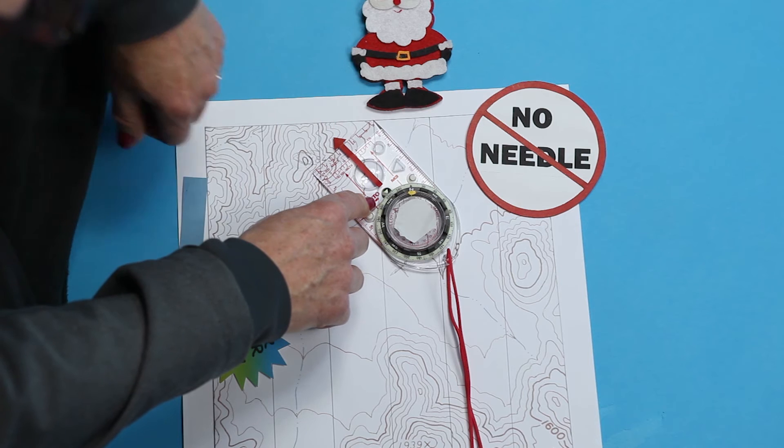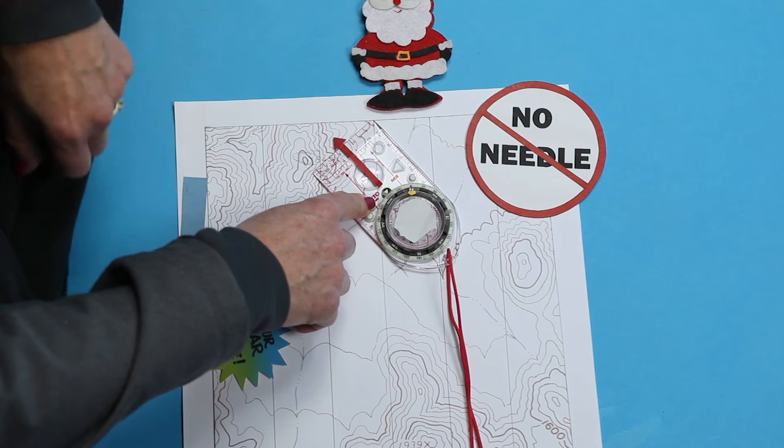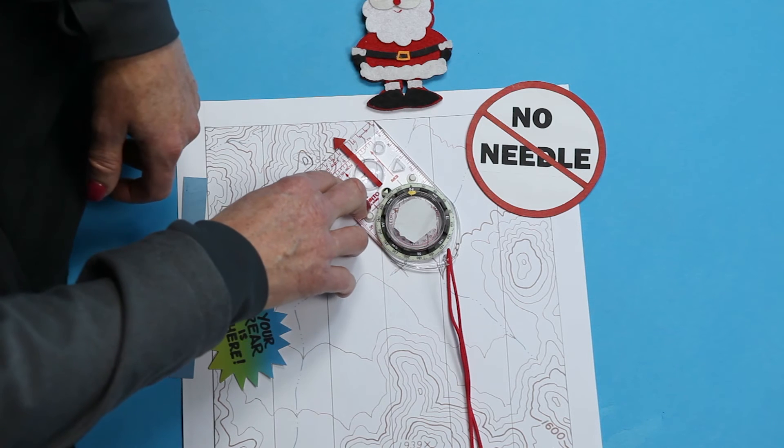You turn the ring, so you set the bearing. Read the bearing at the bearing pointer. 320 degrees. Is that easy or what?